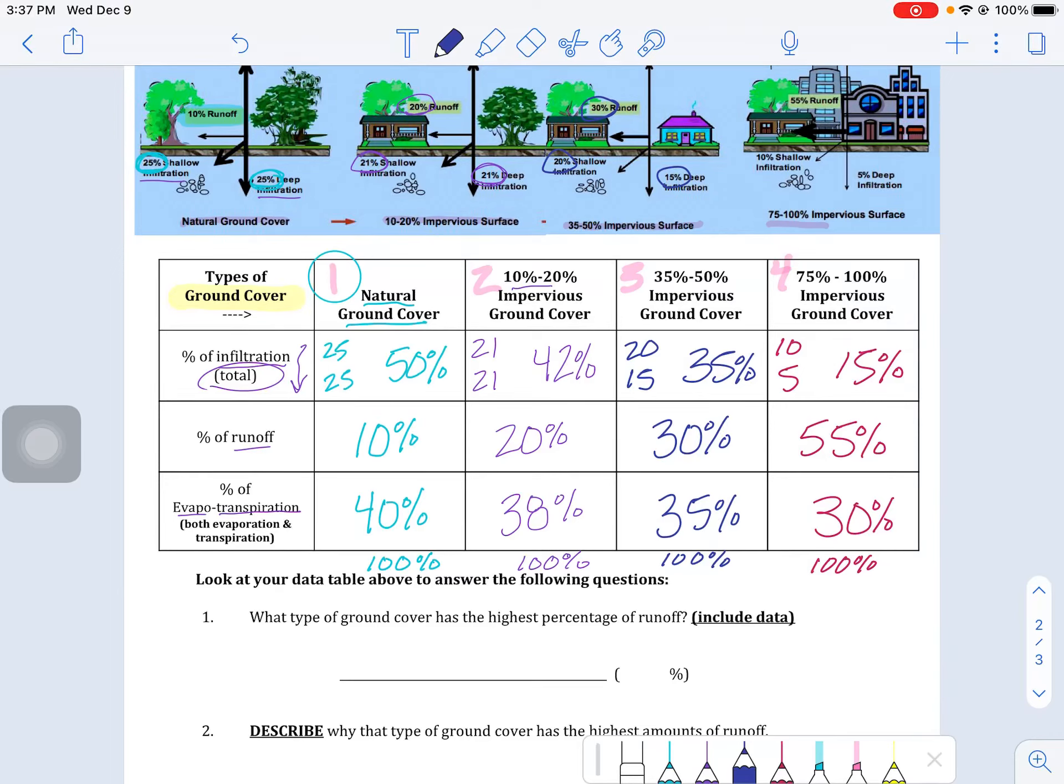All right, so let's take a look at these first couple analysis questions, all related to our data table that we just created. What we're looking at here again is four different ground covers, and we were investigating the difference of these three processes in the water cycle.